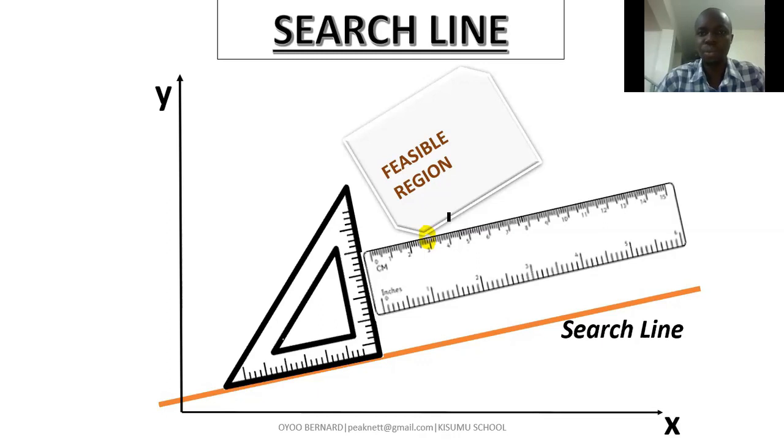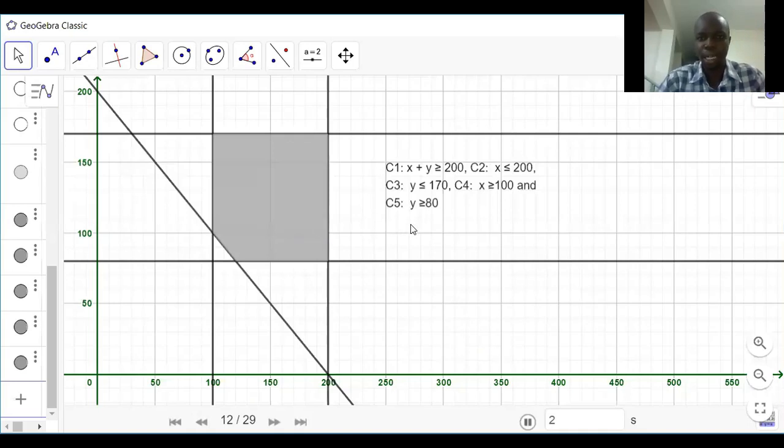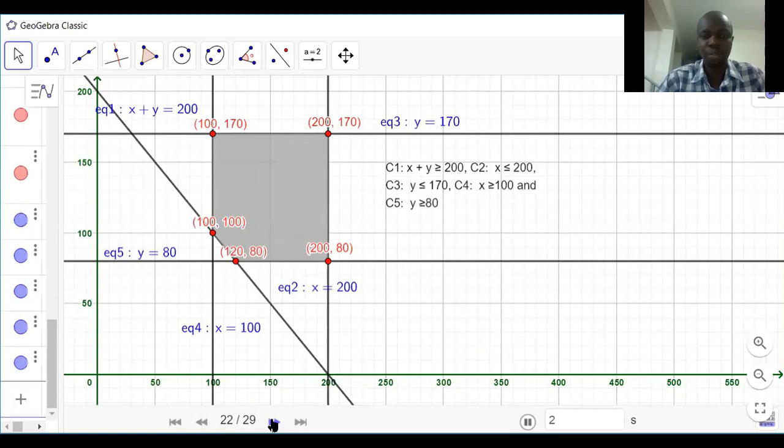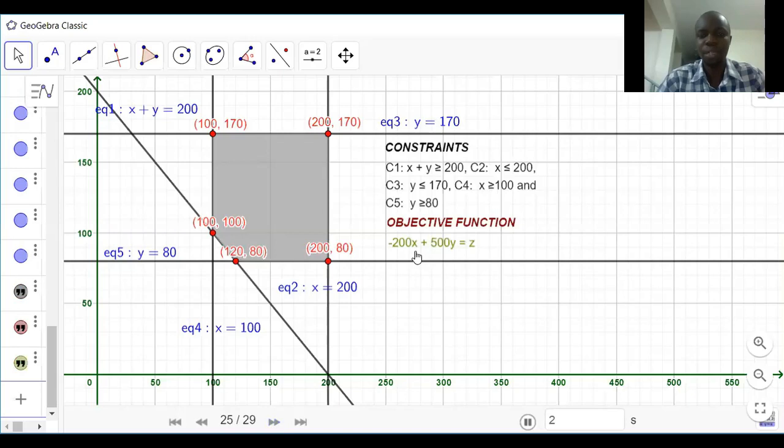So let's now look at the region that we came up with in our last video. So this is it. Here we have the corner points, the coordinates given just like that, the equations of the lines that are involved. Of course, the region was arrived at after considering the constraints that we have right here. And then the objective function, we have -200x + 500y = z.